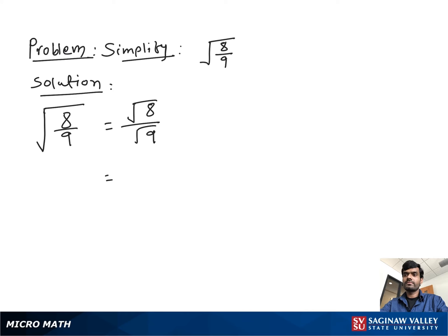Then we find out the perfect square factor of 8. So we can write square root 4 times square root 2 over square root 9, which is 3. Then we get square root 4, which is 2, times square root 2 over 3, which is our final answer.